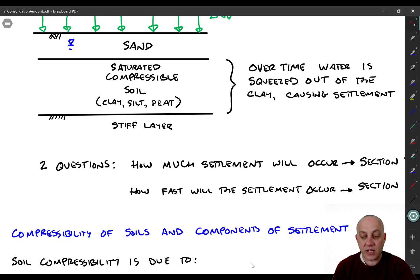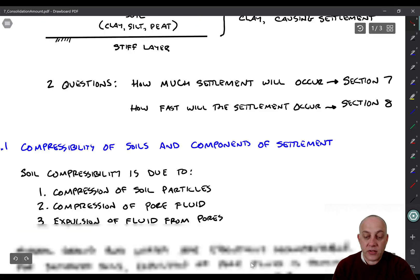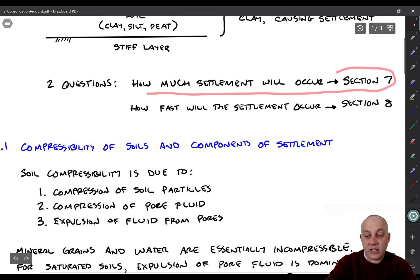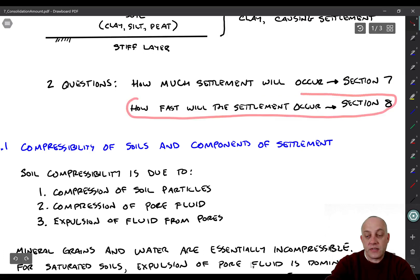So the question of how much settlement will occur, that's what we're talking about in this section, section 7. The question of how fast will the settlement occur is section 8, and that's where we get to solve the second-order partial differential equation. So that would be exciting.